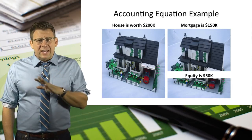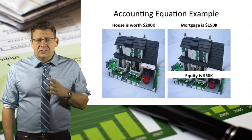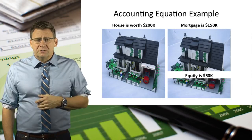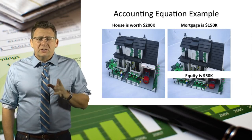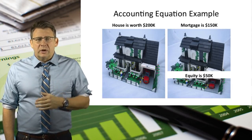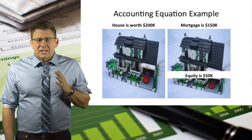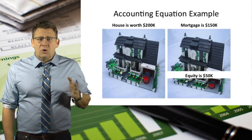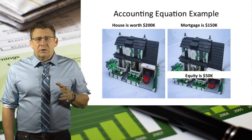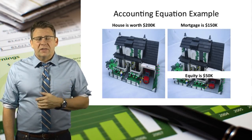At this point, the accounting equation is not in balance because $200,000 does not equal $150,000. The remainder is equity. The owner has $50,000 equity in the home. Equity represents the owner's claims on the asset.